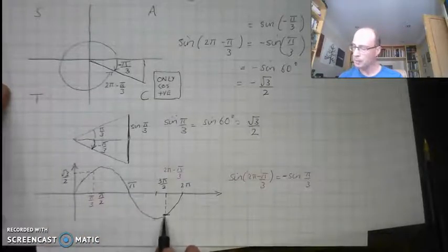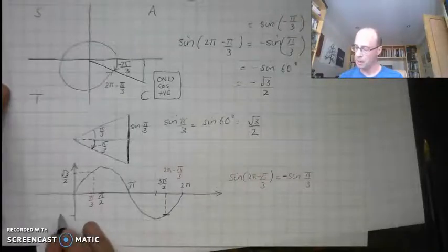Using my symmetry, it's going to have the same value as this, but it's negative rather than positive. So it's down here at negative √3/2.